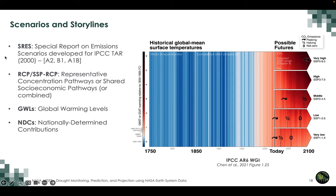Defining some scenarios: SRES, or Special Report on Emission Scenarios, were developed by the IPCC early in 2000. Then there were Representative Concentration Pathways, or RCPs. And now there are SSP-RCPs — Shared Socio-Economic Pathways combined with Representative Concentration Pathways. From IPCC Assessment Report 6, surface temperature anomalies from 1750 to today and projections up to 2100 are shown, with anomalies calculated with respect to the 1850–1900 period.